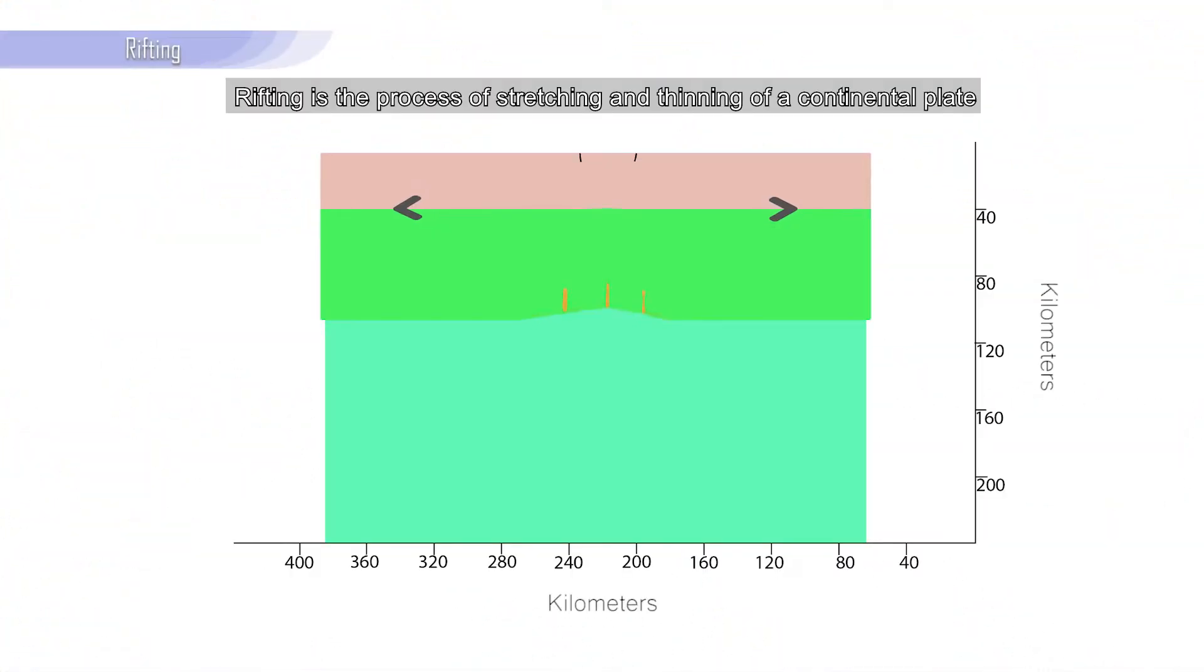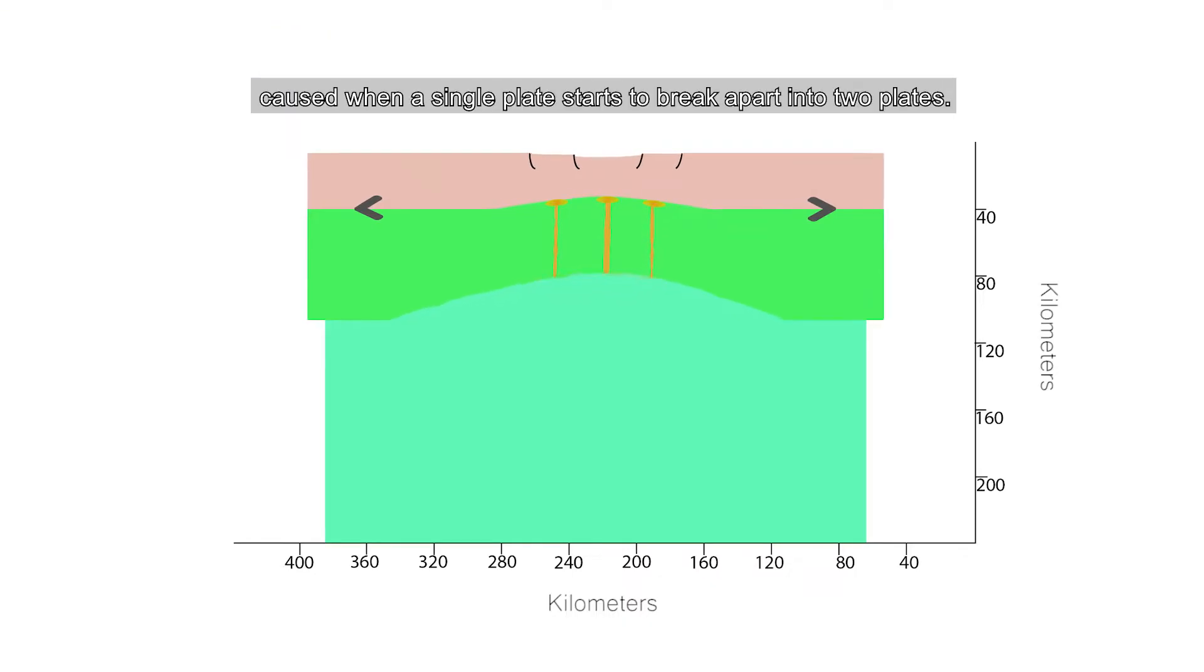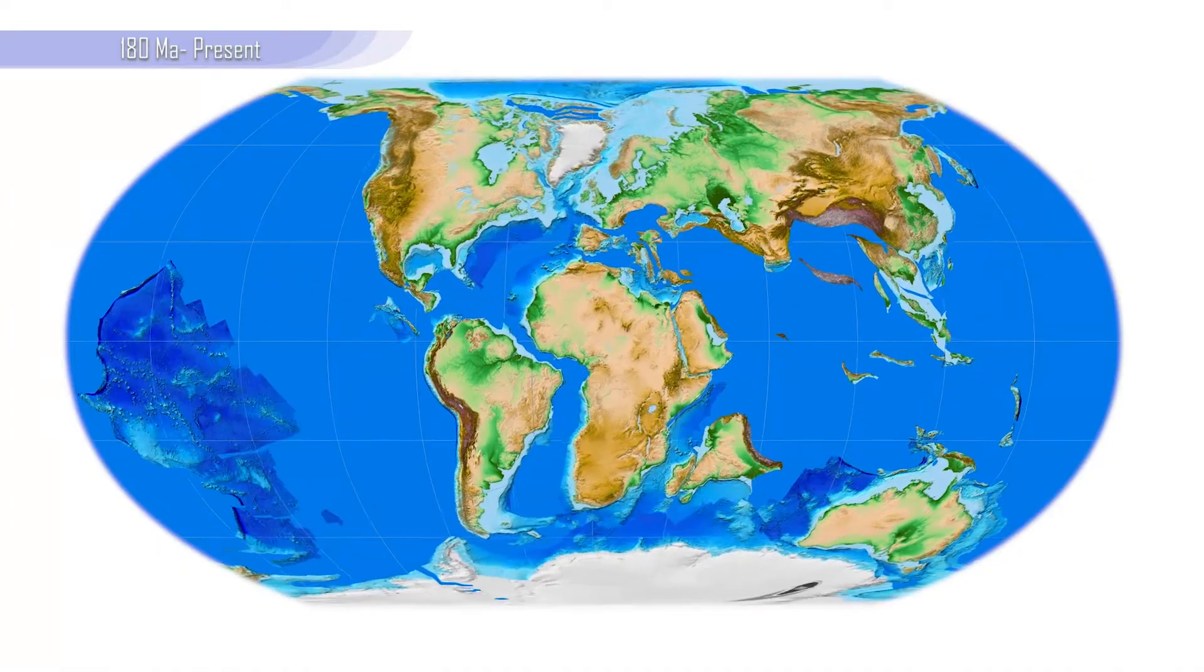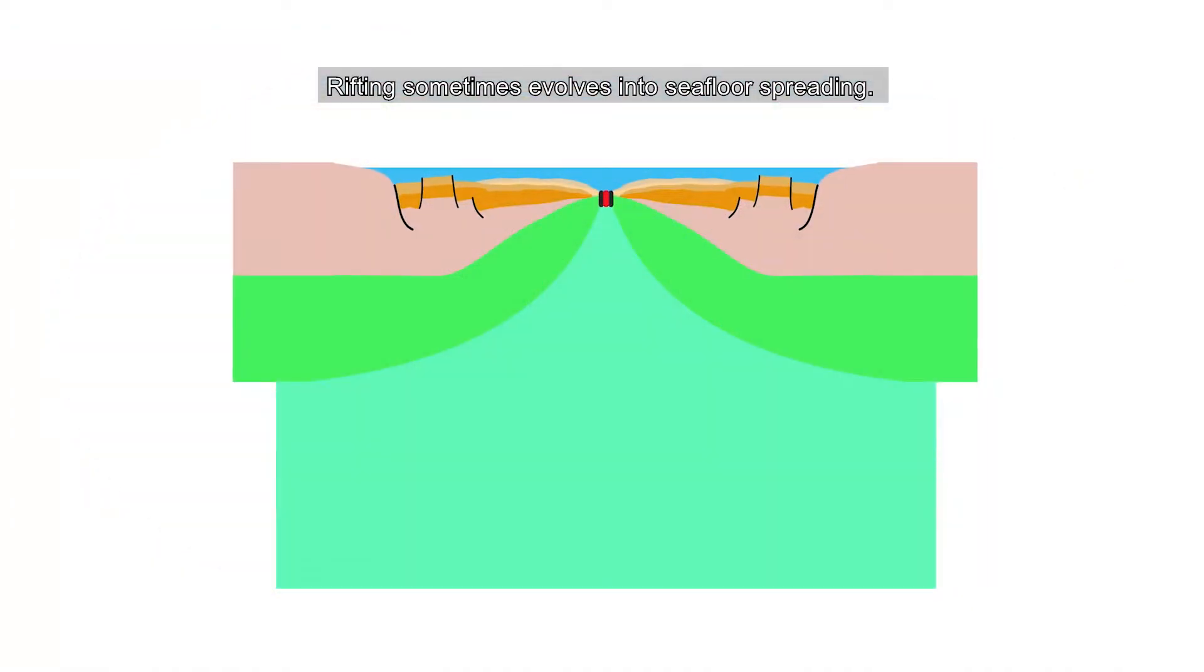Rifting is the process of stretching and thinning of a continental plate, caused when a single plate starts to break apart into two plates. Rifting sometimes evolves into seafloor spreading.